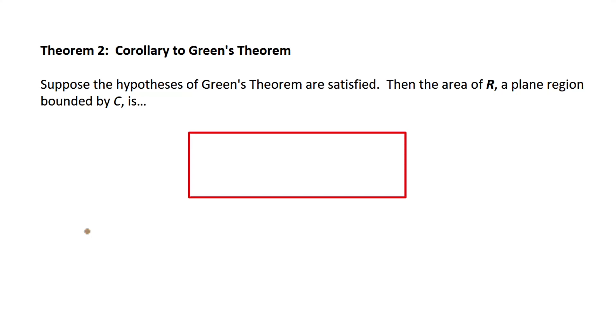Theorem 2, it's called Corollary to Green's Theorem. Suppose the hypotheses of Green's Theorem are satisfied, then the area of the region R, a plane region bounded by C, is...